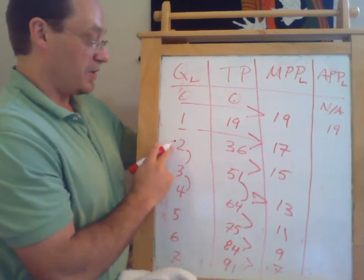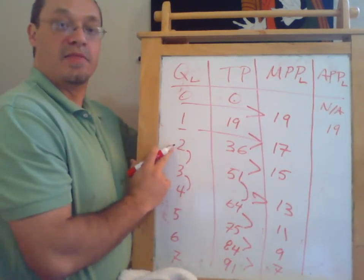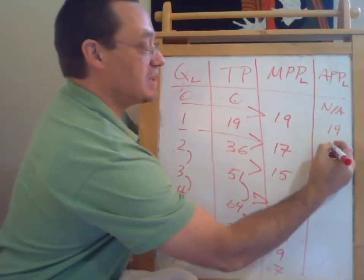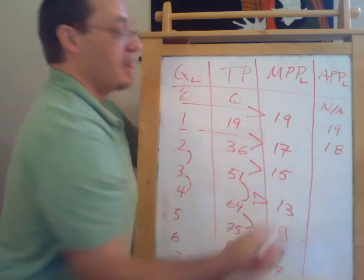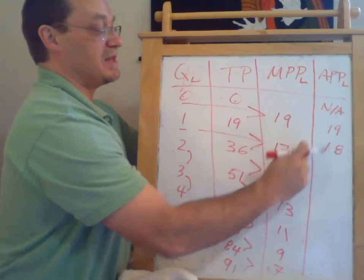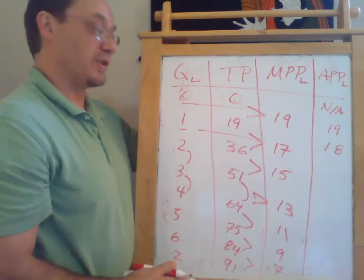Here, the average productivity and the marginal productivity for the first worker are the same. But when we go here, the average productivity is 36 divided by 2, or 18. And notice the average productivity, 18, is the average of the two marginal productivities.